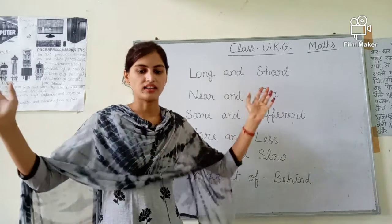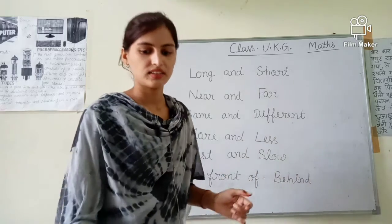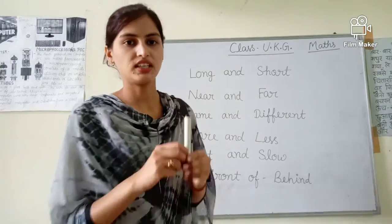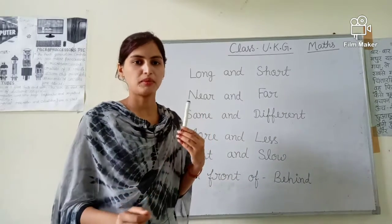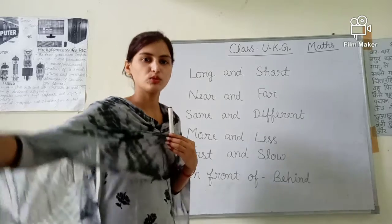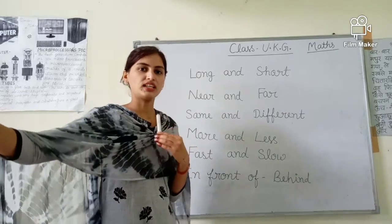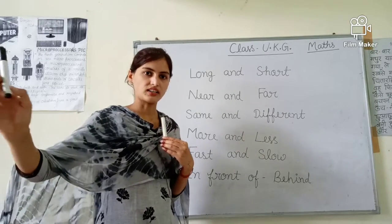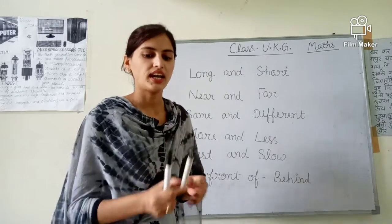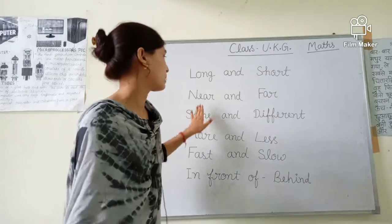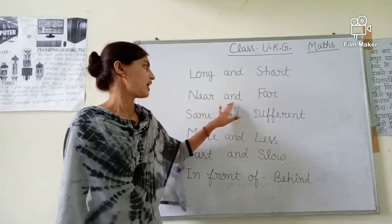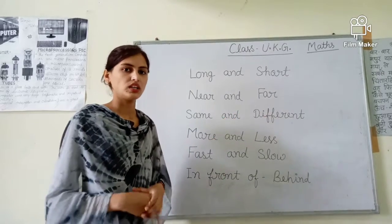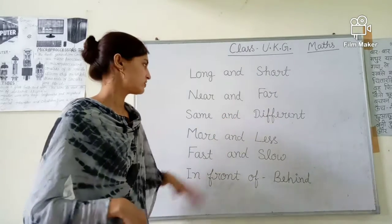Near, far. Jasi hai markal — meere pass hai, or yeh markal dur hai. Ye ho gaya near, ar ye ho gaya far. Near and far. Near means pass and far means dur.